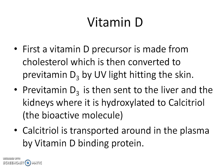Let's look at vitamin D. A vitamin D precursor is made from cholesterol, which is then converted to pre-vitamin D3 by UV light hitting the skin. Pre-vitamin D3 is then sent to the liver and the kidneys, where it is hydroxylated to calcitriol, which is the bioactive molecule. Calcitriol is transported around in the plasma by vitamin D binding protein.